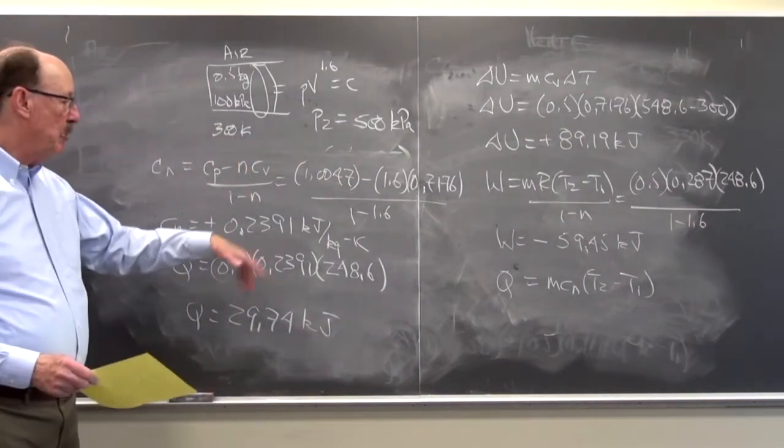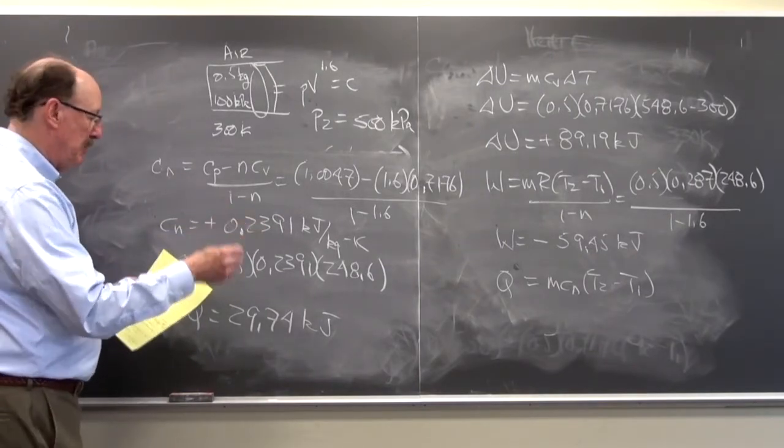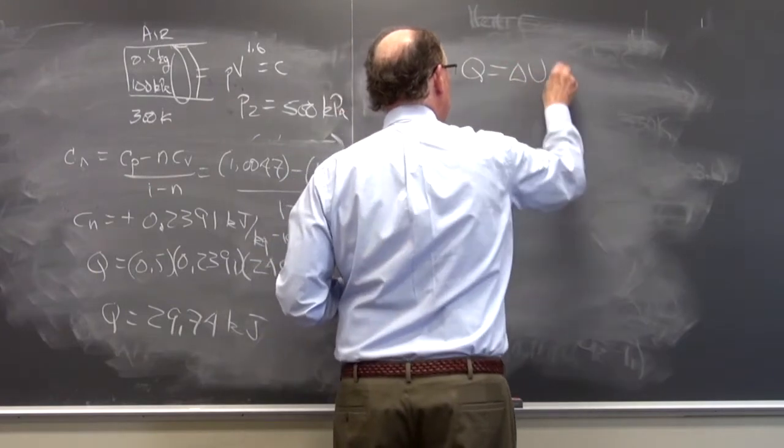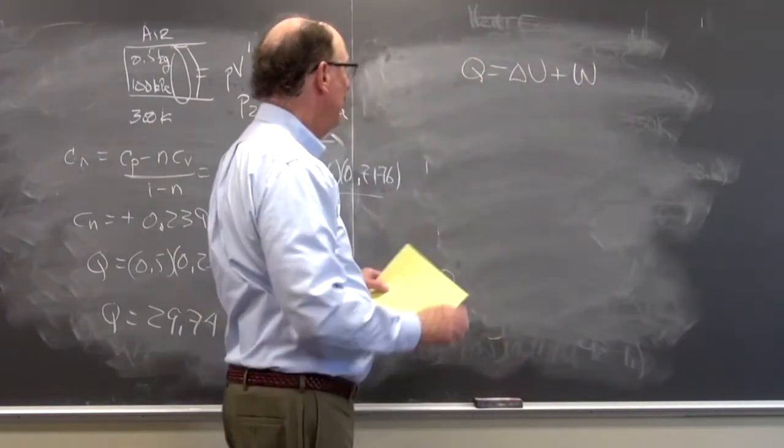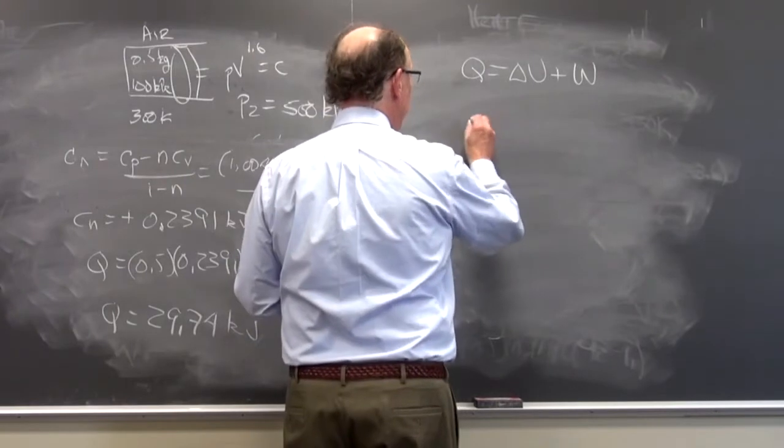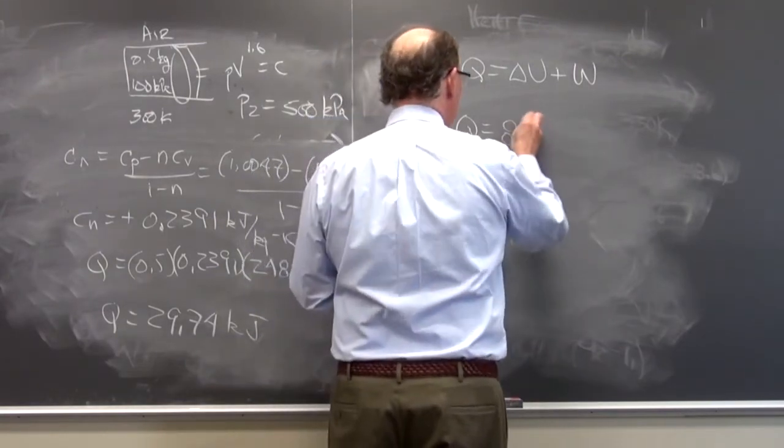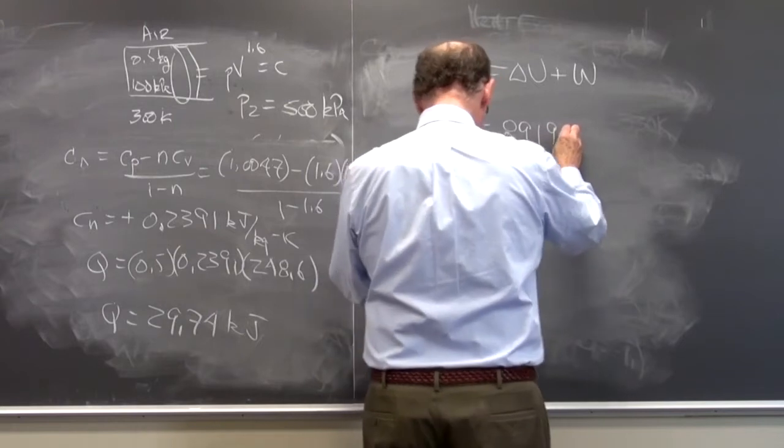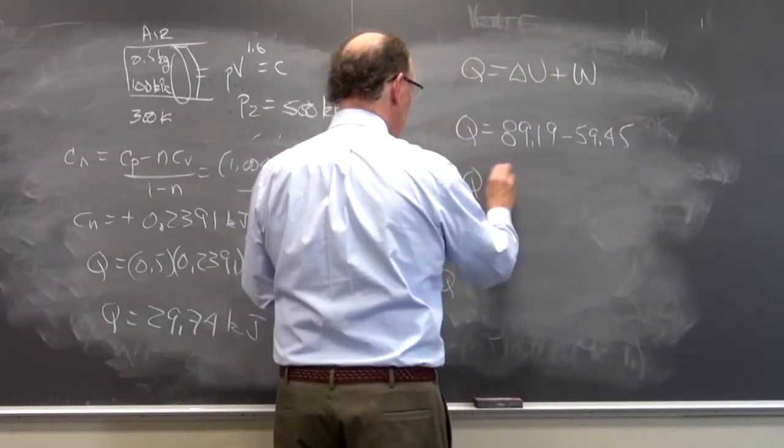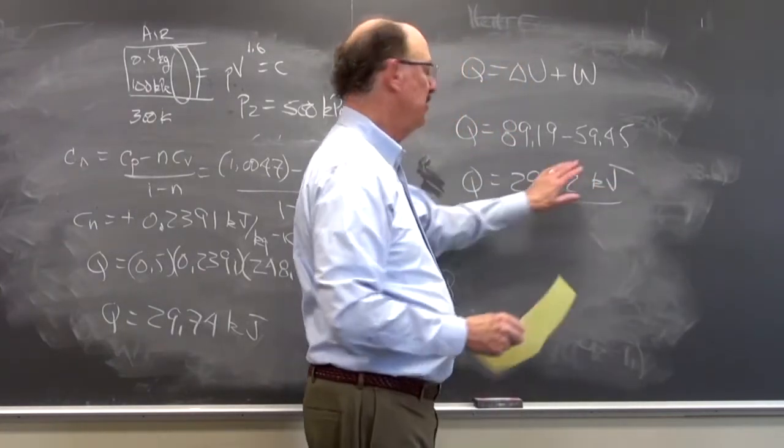So I see that when I add the heat and work together I'll get delta U. If I went back and I look at the first law Q is equal to delta U plus W. Now if I didn't use the C sub n and I use these values I'd have Q is equal to delta U which was 89.19, and W was equal to minus 59.45. I would see that Q is equal to 29.72 kilojoules, close enough. The difference is round off error.